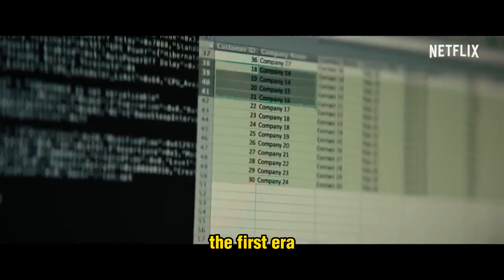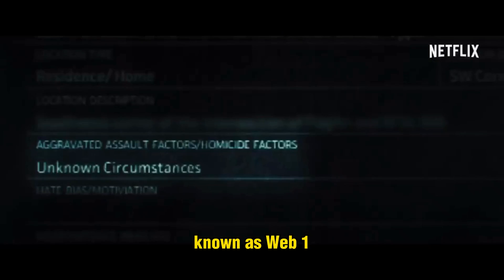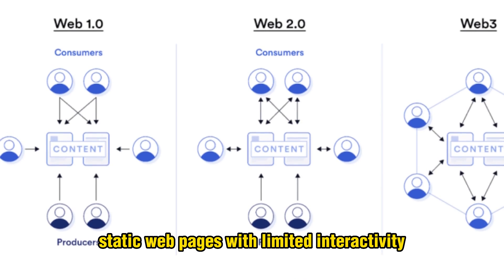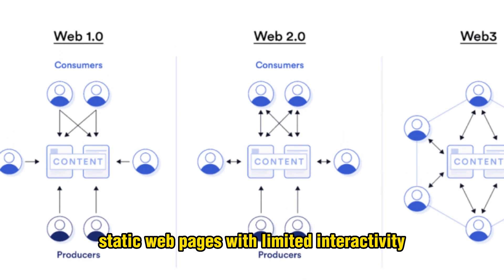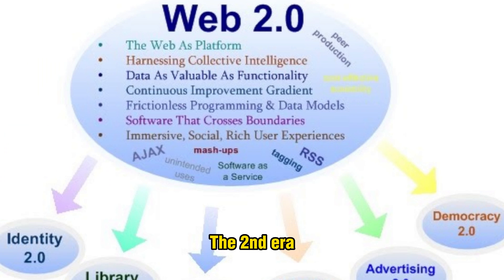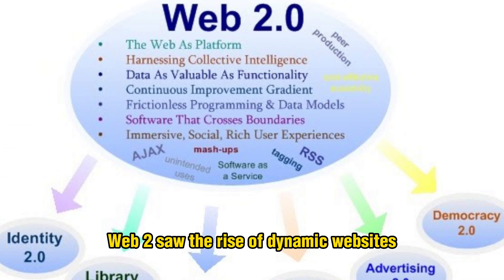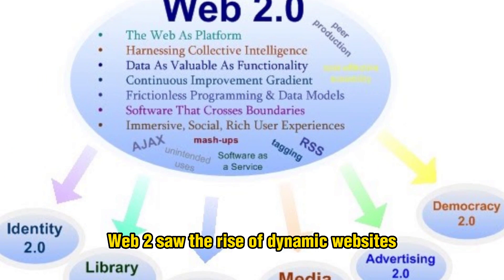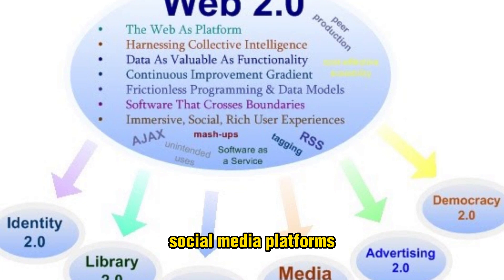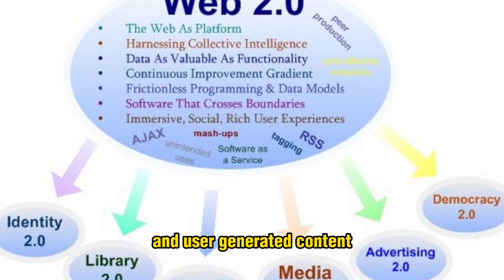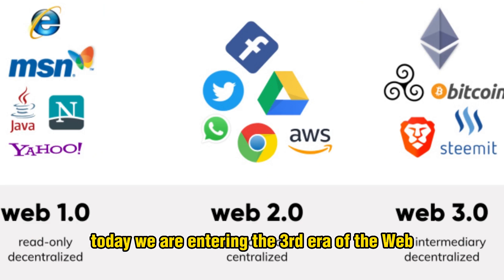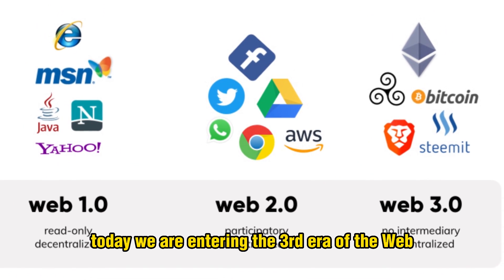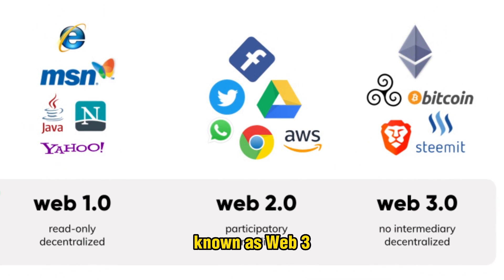The first era, known as Web 1, was characterized by simple static web pages with limited interactivity. The second era, Web 2, saw the rise of dynamic websites, social media platforms, and user-generated content. Today, we are entering the third era of the web, known as Web 3.